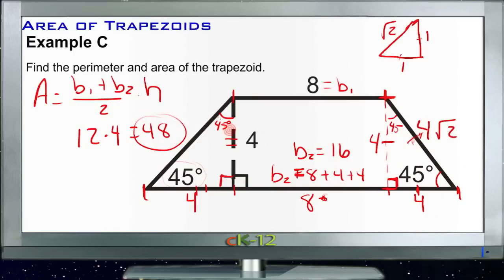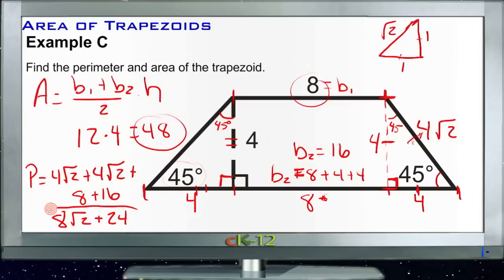So we have 4 square roots of 2 plus 4 square roots of 2. So our perimeter is 4 roots of 2 plus 4 more square roots of 2 plus 8 across the top plus 16 across the bottom. So 4 square roots of 2 and another 4 square roots of 2, that's 8 square roots of 2, plus 8 plus 16, that's 24. So our perimeter is 8 square roots of 2 plus 24.